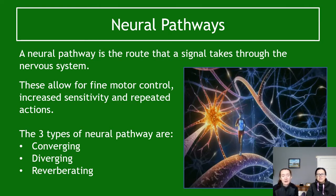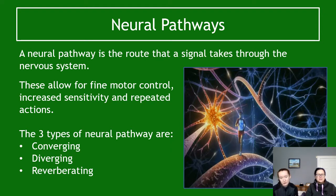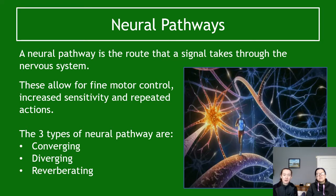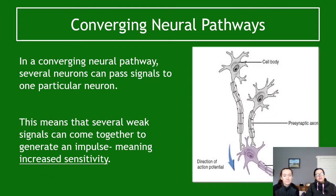In terms of the neural pathway, you learned a bit about the pathways of nerves in National 5, but you're about to learn quite a lot more over the next few key areas. Neural pathways are basically just the route that a signal takes through the nervous system — going through sensory, inter, and motor neurons. There are three main types we're going to talk about: converging, diverging, and reverberating.